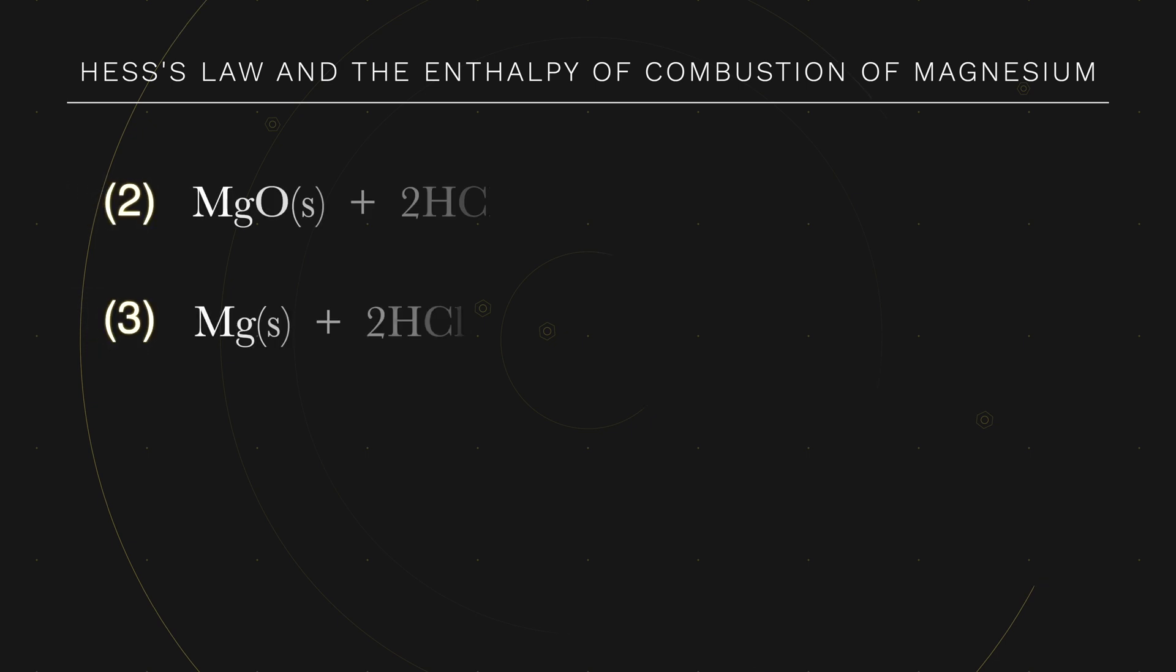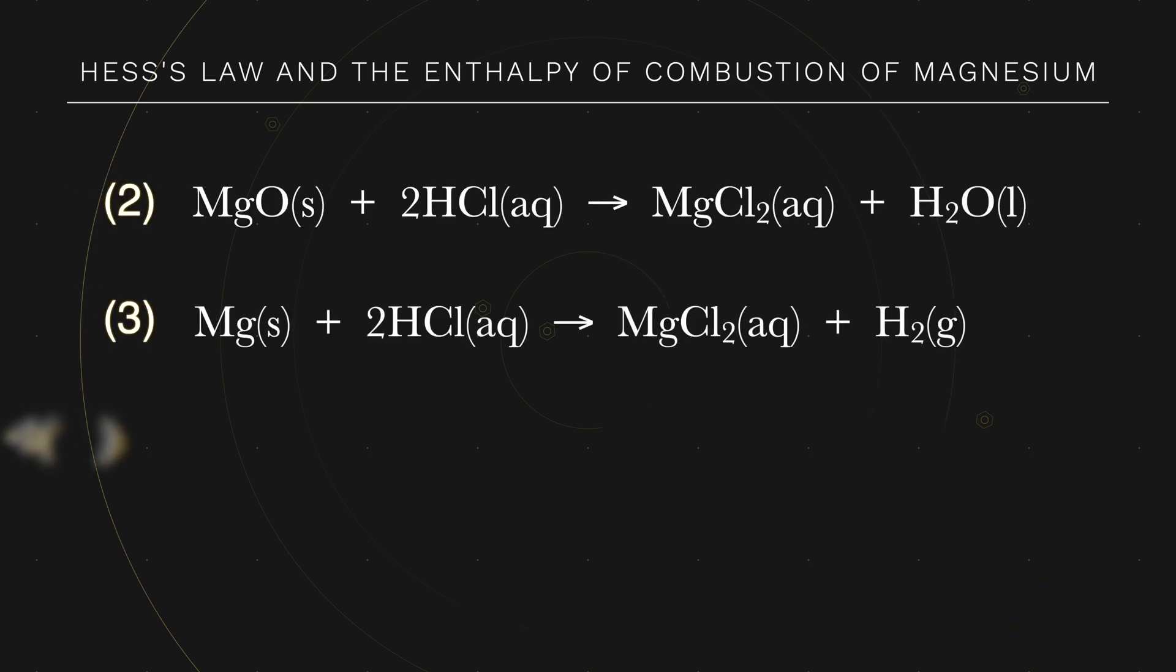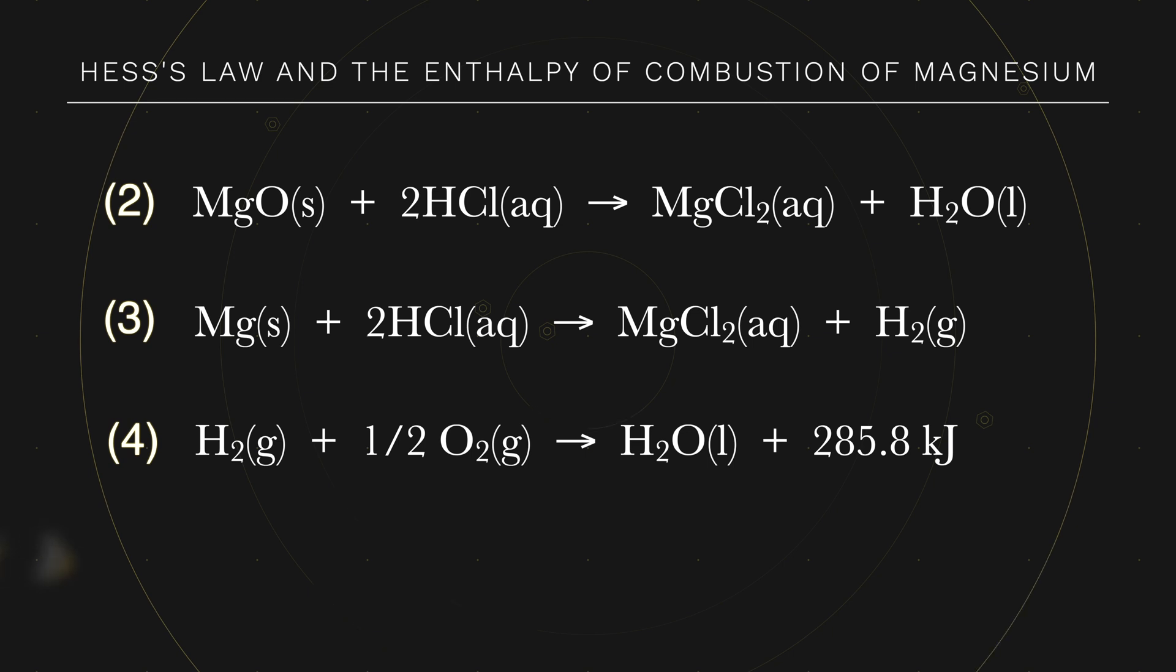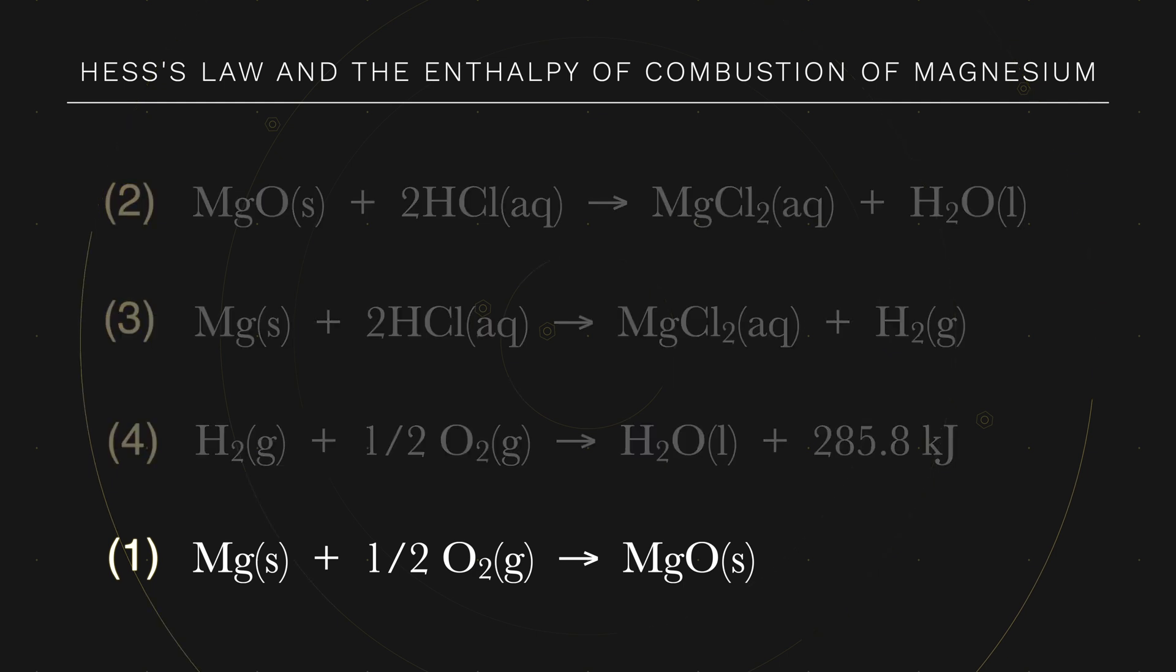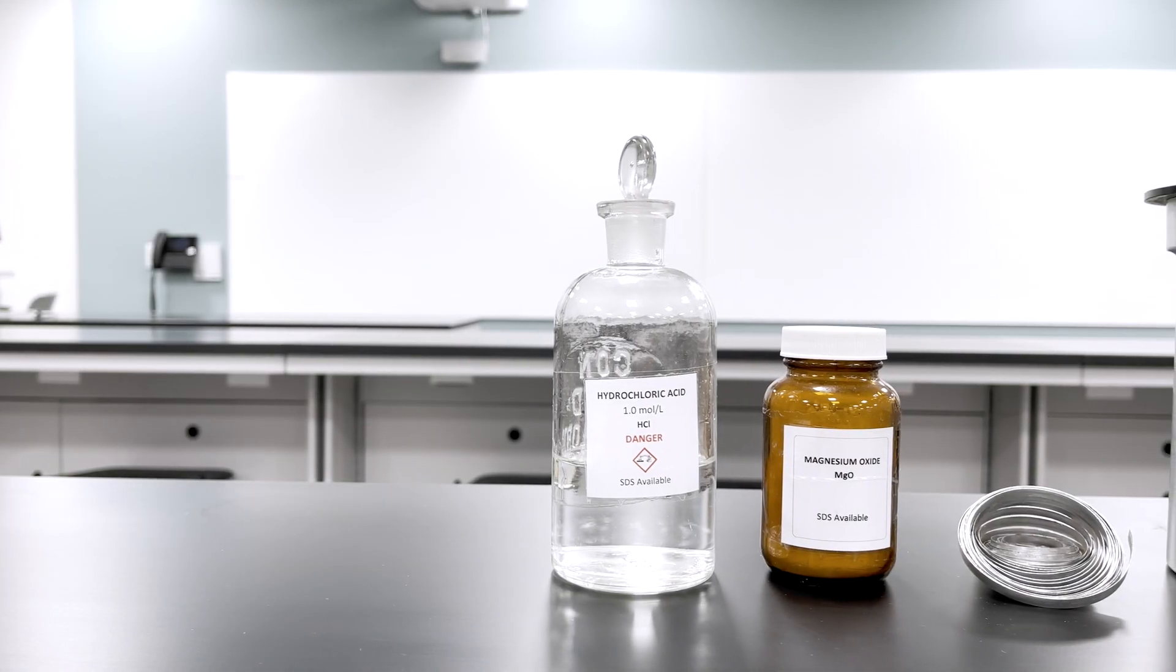In this lab, we will determine the enthalpy changes of two other reactions and, combined with the known enthalpy change of a third reaction, use Hess's law to determine the enthalpy change for the combustion of magnesium. Equation 1 is the combustion reaction of magnesium: Mg(s) + 1/2 O₂(g) → MgO(s). This is the same as the formation reaction of magnesium oxide and is our target equation for this lab.